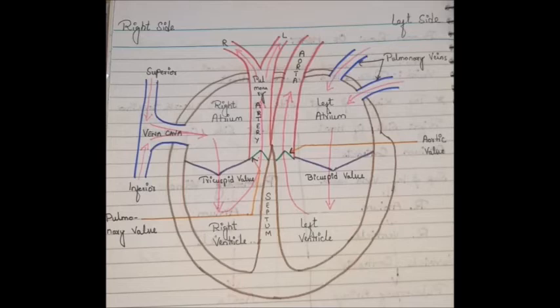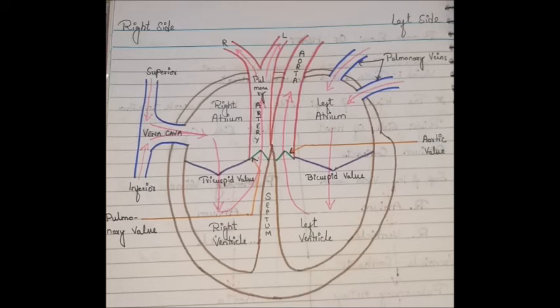Blood from the right ventricle moves into the pulmonary arteries through the pulmonary valve. The pulmonary arteries carry deoxygenated blood to the lungs, where carbon dioxide is removed and the blood picks up oxygen. This oxygen-rich blood moves into the left atrium through the pulmonary veins, then into the left ventricle through the bicuspid valve, and finally into the aorta through the aortic valve. This oxygenated blood then circulates to the whole body, and this cycle repeats.